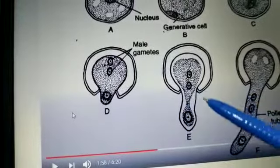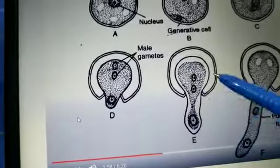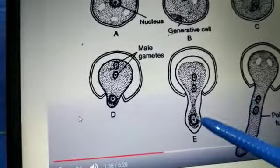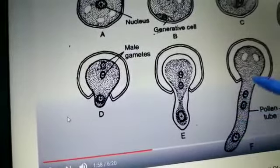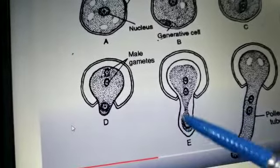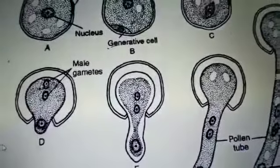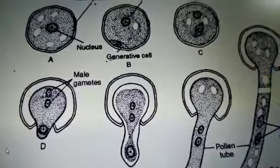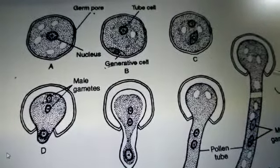The tube cell helps in the formation of the pollen tube. This is necessary because during fertilization the male gamete must reach the female reproductive organ for the male and female gametes to fuse together. For the migration of the male gamete, the tube cell forms a long penetrating organ called the pollen tube. In diagrams E, F, and G, the tube cell elongates considerably. In the mature stage, the exine and intine separate where the tube is formed, and the male gametes are carried along with the tube nucleus through the tube to the female reproductive organ.